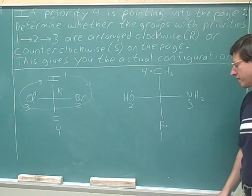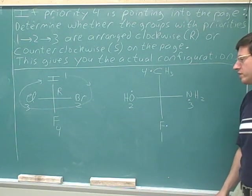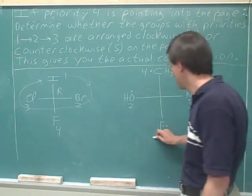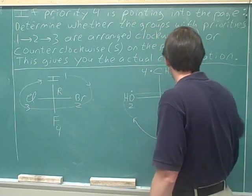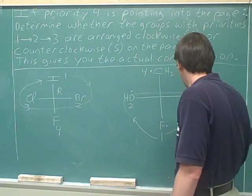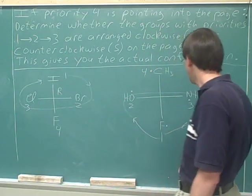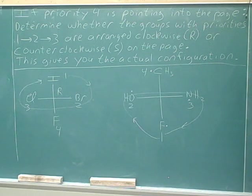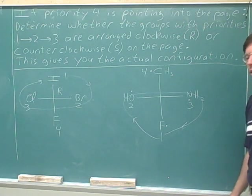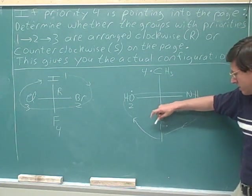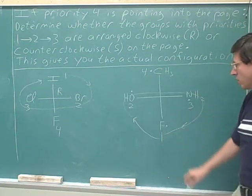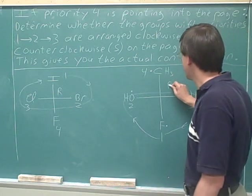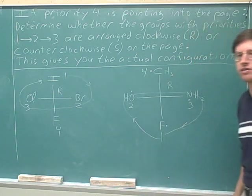So we can just look at what the configuration of 1 to 2 to 3 is. Going from 1 to 2 to 3, we're forming a clockwise circle. If you look at the arrows going from 1 to 2 to 3, they're going clockwise. Again, that is an R configuration.